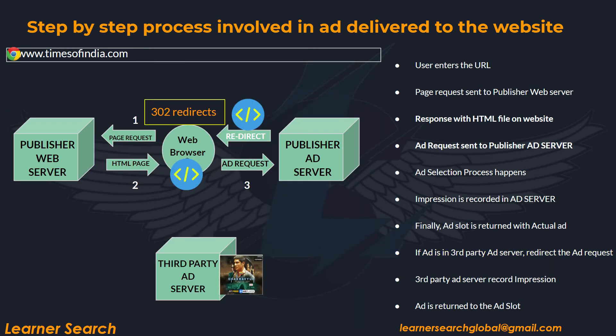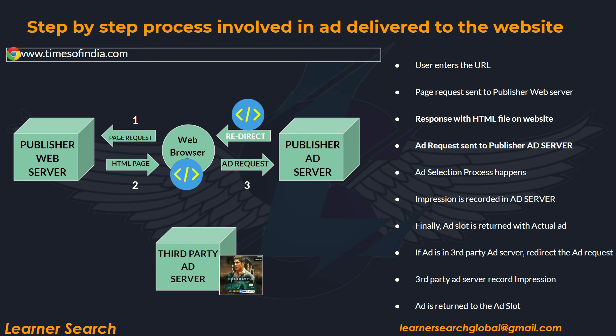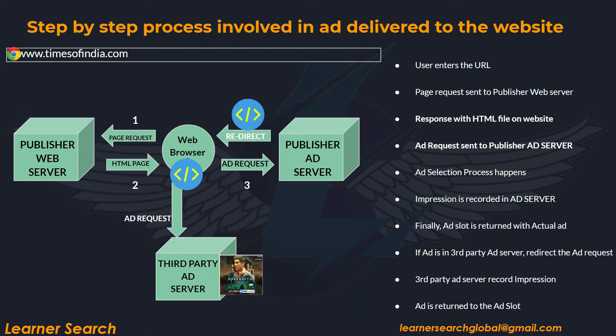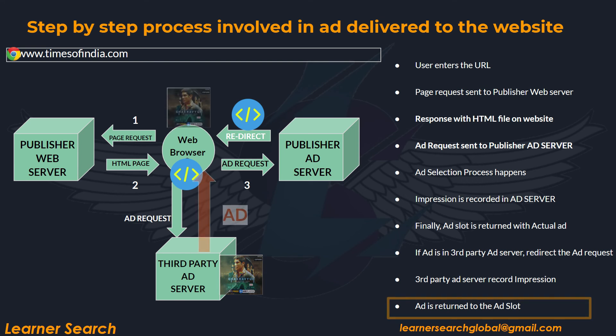These redirects are called 302 redirects, which tell the browser that the page has been temporarily moved. This helps the ad server record an impression in its database. The third-party ad server then receives the ad request, and by matching the ad request details, requirements, and targeting options, it selects the best ad. The third-party ad server records the impression, and then the original creative is sent back and delivered to the publisher ad inventory.